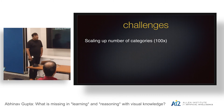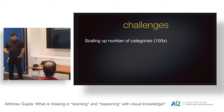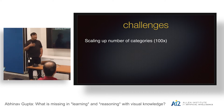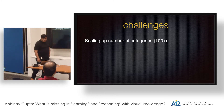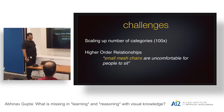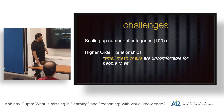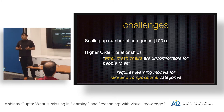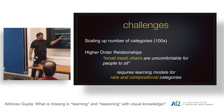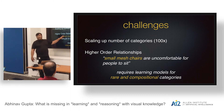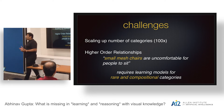The first challenge was scaling up categories. In the original NEIL we learned 60,000 models, but we need to scale up more than 100 times — there are a few million categories we actually need to learn. A related challenge is learning higher-order relationships; for example, 'small mesh chairs are uncomfortable for people to sit.' That requires learning a model of a small mesh chair, which is compositional — you have to combine a model of chair, a model of mesh, and the attribute 'small' to learn what a small mesh chair is.